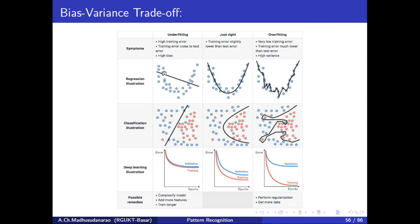You can see that this line can't model this data perfectly - there is so much error. With the help of a line, you can't model this because this looks like a non-linear function. A second-order function might fit well to this data. For example, y equals to w1x plus w2x squared plus w0 might fit well to this particular data.